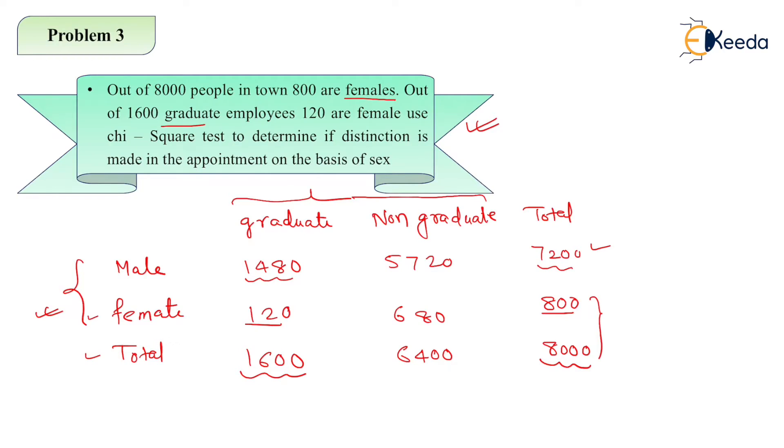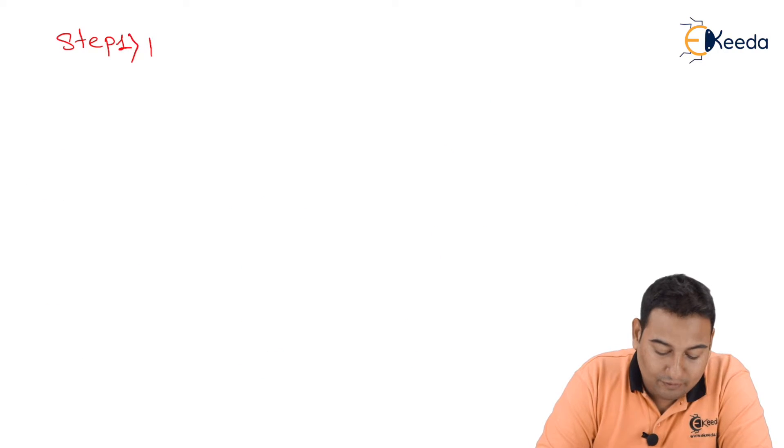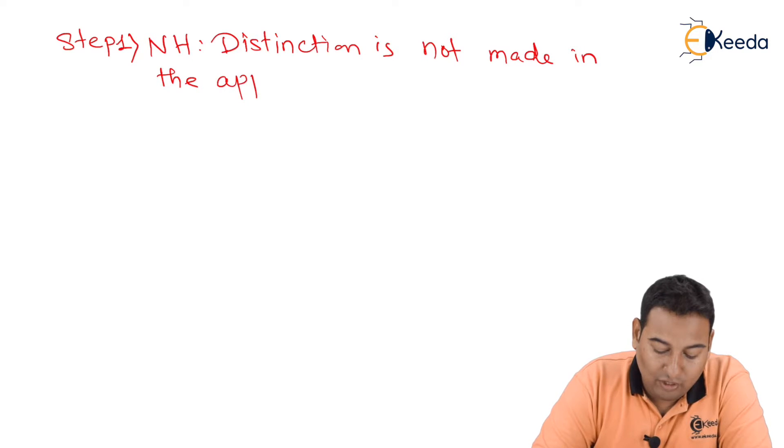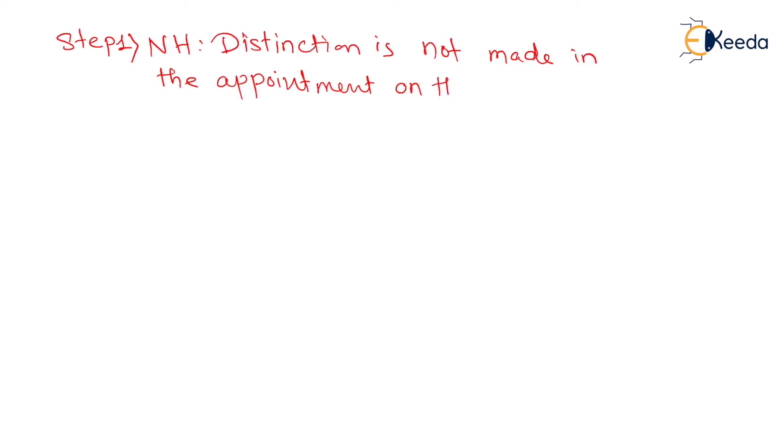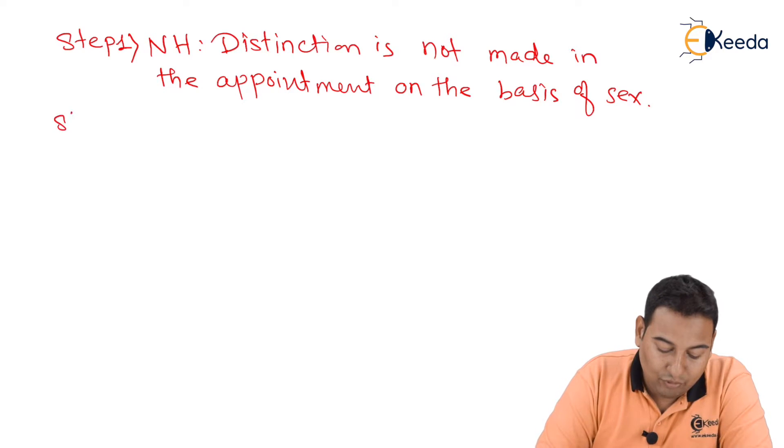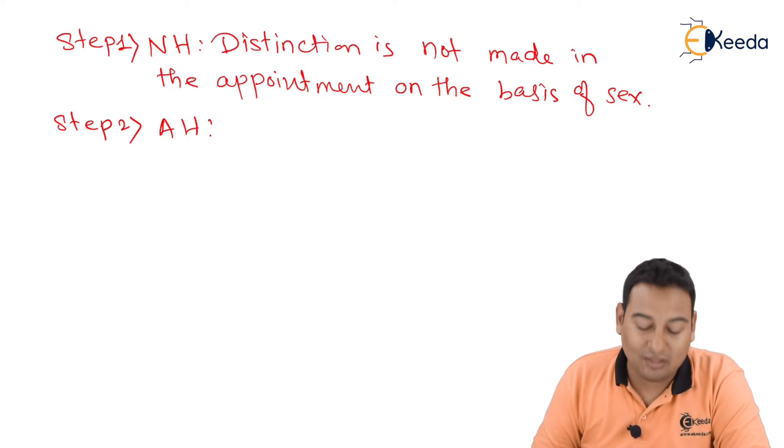It is asked to use chi-square test to determine if distinction is made in the appointment on the basis of sex. Null hypothesis is no. So step number one is your null hypothesis: distinction is not made in the appointment on the basis of sex. In alternate hypothesis, you're going to say yes, that means the distinction is made in the appointment on the basis of sex.